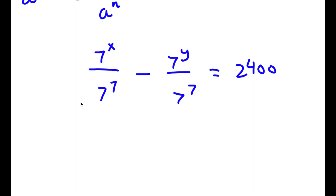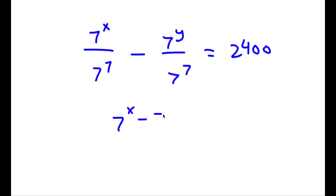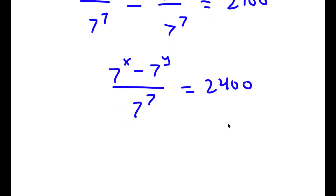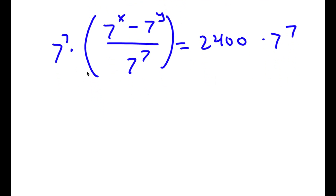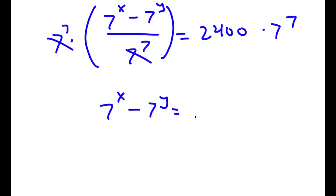Since both denominators are the same, I can subtract the numerators: this becomes 7^x minus 7^y, all over 7^7, equals 2400. Now I multiply both sides by 7^7. The 7^7 on the left cancels, leaving 7^x minus 7^y equals 7^7 times 2400.